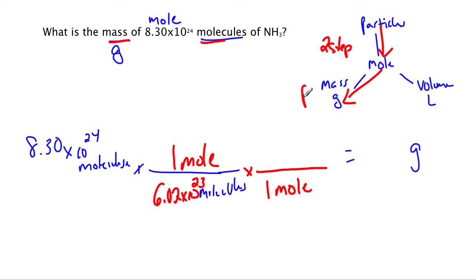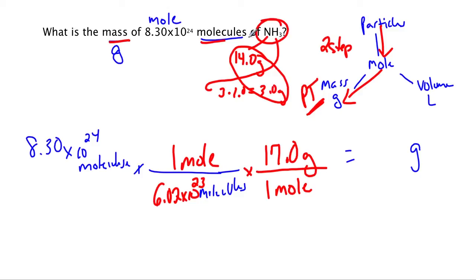Now this is where the periodic table comes into play. Every single time you have to figure out the mass of something, you need to look at the periodic table. So we've got nitrogen on the periodic table, it's 14 grams for one mole. Hydrogen, there's 3 times 1.0, so that equals 3.0 grams. And then if we add 14 and 3 up together, we know that one mole is going to equal a grand total of 17 grams for this substance, for NH3.